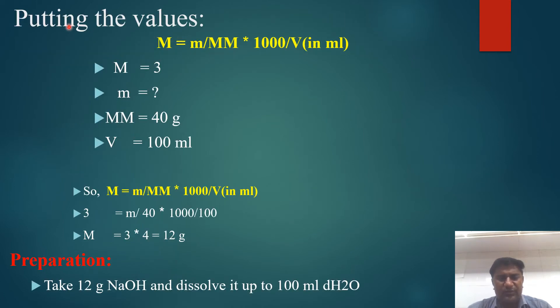Putting the values in the formula: M = (m/MM) × (1000/V). M value is 3 molar. We need to prepare 3 molar solution, so M = 3. We need to find m, the mass of sodium hydroxide. The molar mass of sodium hydroxide is 40 grams, and the final volume V is 100 ml.